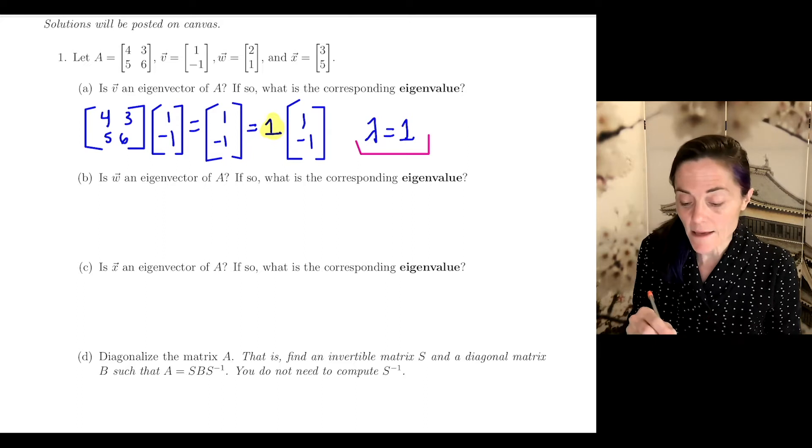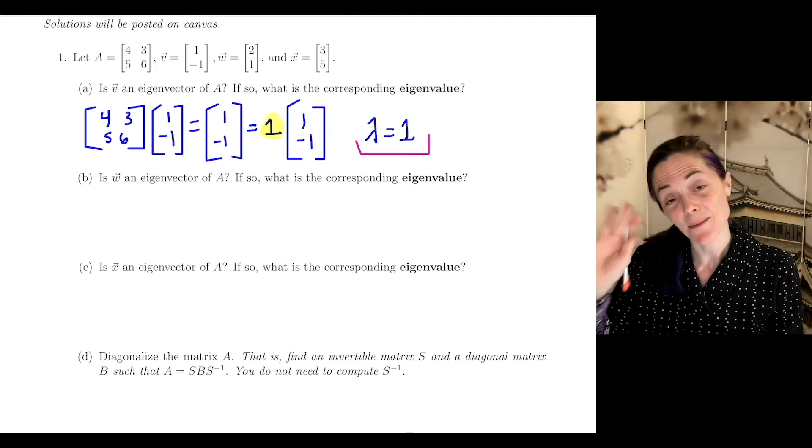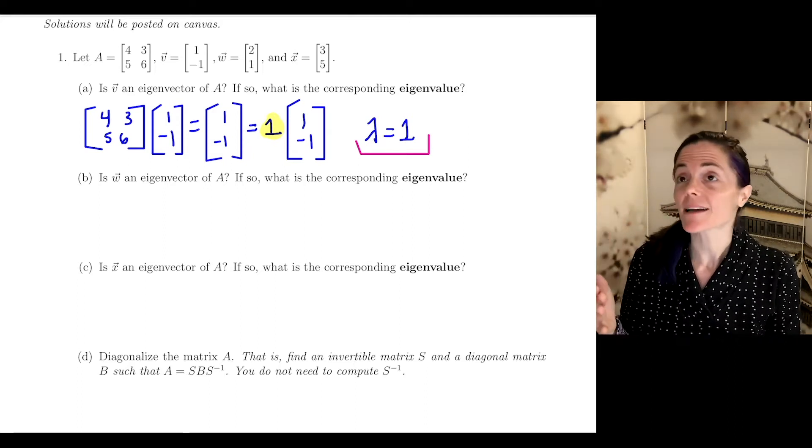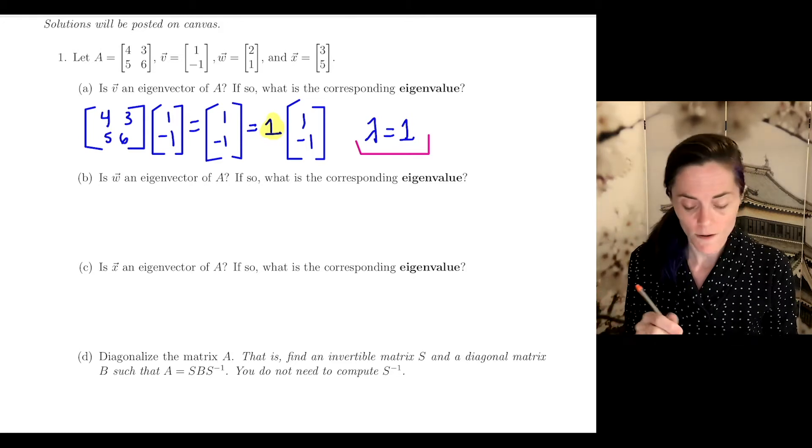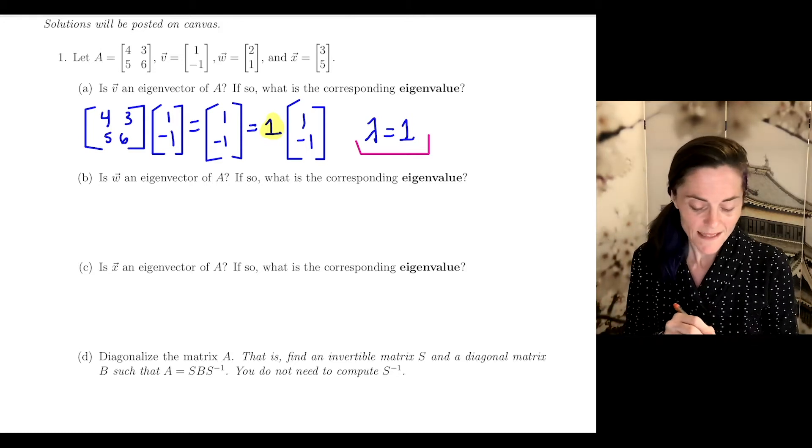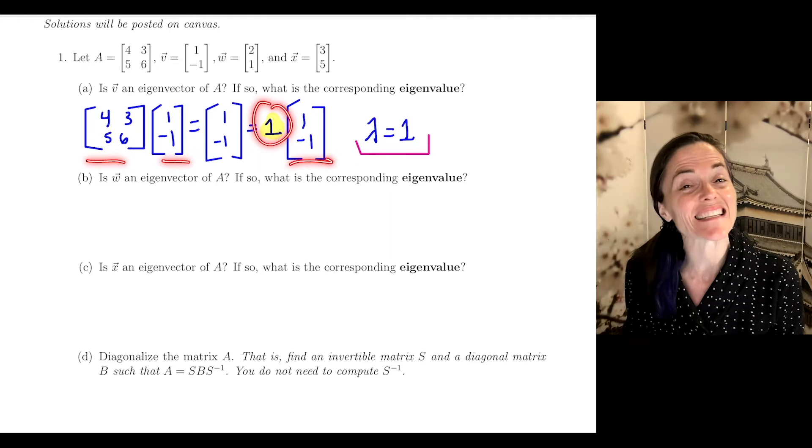If we recall, an eigenvector for an n by n matrix is some vector in R^n that's non-zero and satisfies AV is a multiple of V, just like we see here.